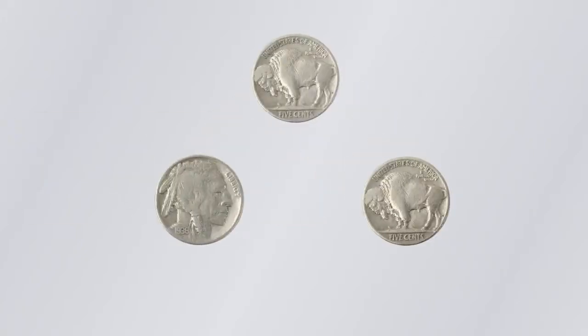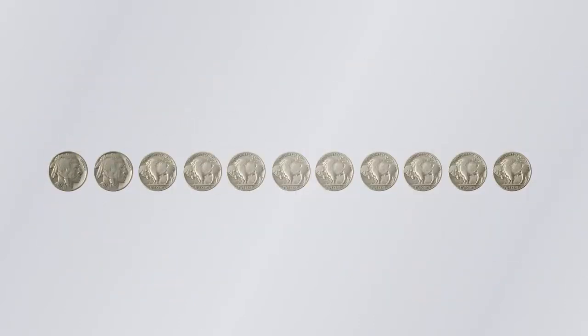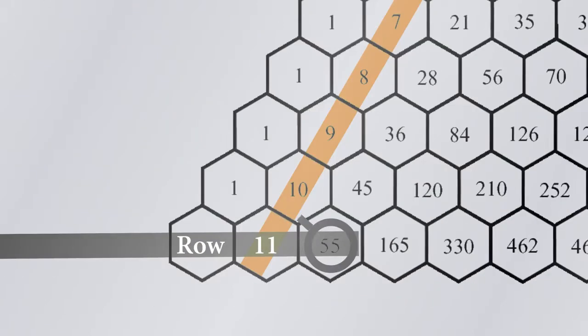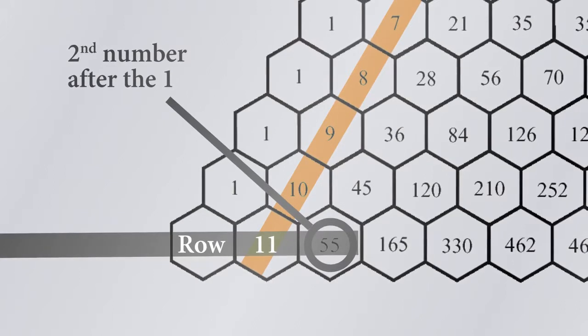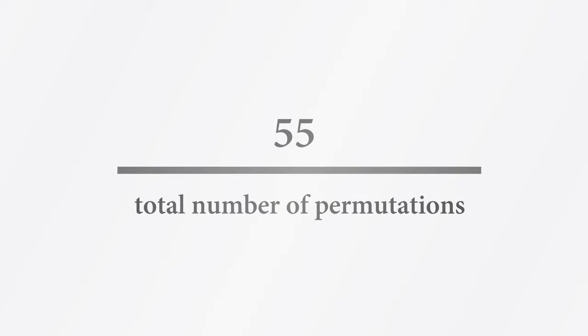So I need to know the number of ways of choosing two items from eleven items. That's exactly this binomial coefficient, which I can read off directly from Pascal's triangle. It turns out there are 55 different ways that you can pick the positions of these two heads out of eleven flips of the coin. If I then divide that by the total number of possible combinations, then I can calculate the probability of two heads in this flip of eleven coins being roughly three percent.